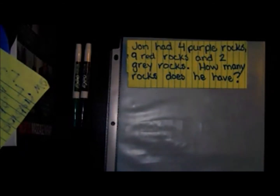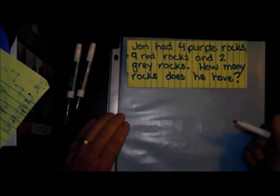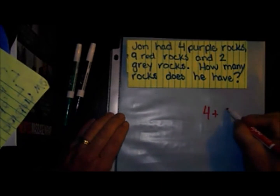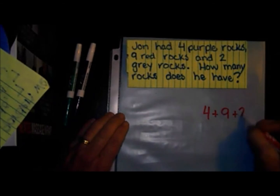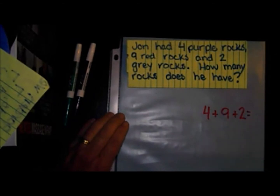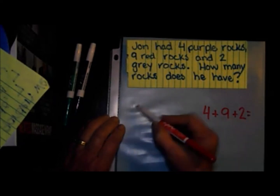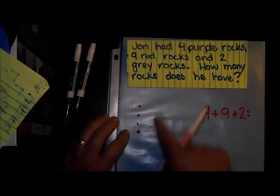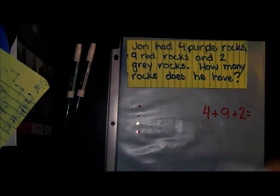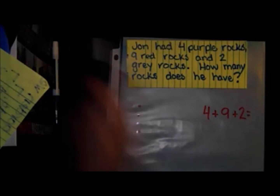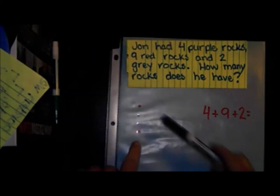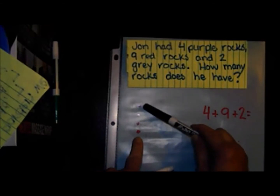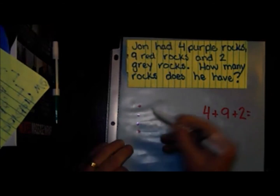We're going to start off and write our problem. We know that we're going to have to add four plus nine plus two. That is our problem. Now we're going to draw it — four purple rocks: one, two, three, four. Nine red rocks: one, two, three, four, five, six, seven, eight, nine.